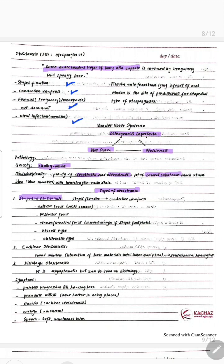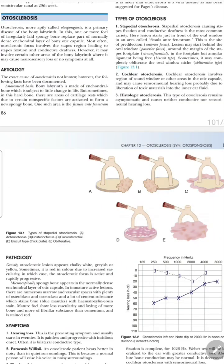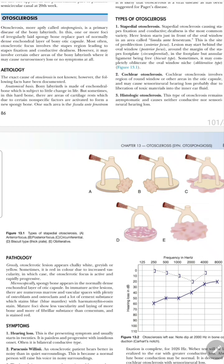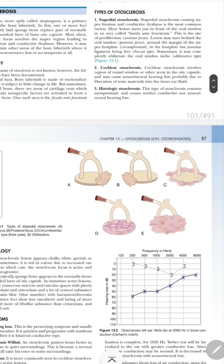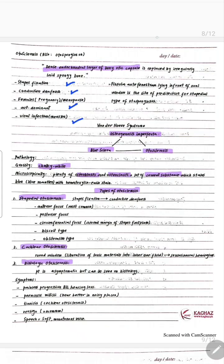The types of otosclerosis: the most common focus is the anterior focus, which is the site of the fistula ante fenestrum. The lesion may start behind the oval window — that is called the posterior focus. It may be around the margin of the stapes footplate, called circumferential. It may be in the footplate but the annular ligament is free — that is called the biscuit type. Sometimes it may completely obliterate the oval window — that is called the obliterative type. All these cause fixation of stapes and conductive deafness.